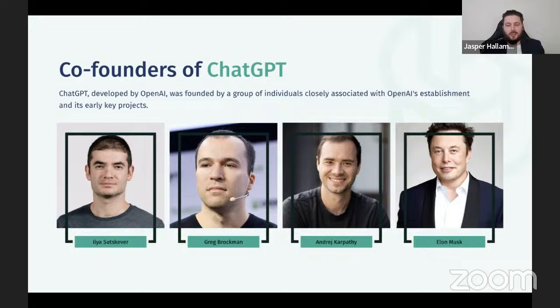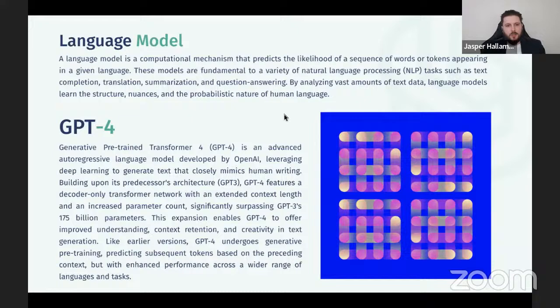A language model is a computational mechanism that predicts the likelihood of a sequence of words and tokens appearing in a given language. These models are fundamental to a variety of NLP tasks such as text completion, translation, summarization, and question answering. By analyzing a vast amount of text data, language models learn to structure words in a way that seems more natural and human-like.